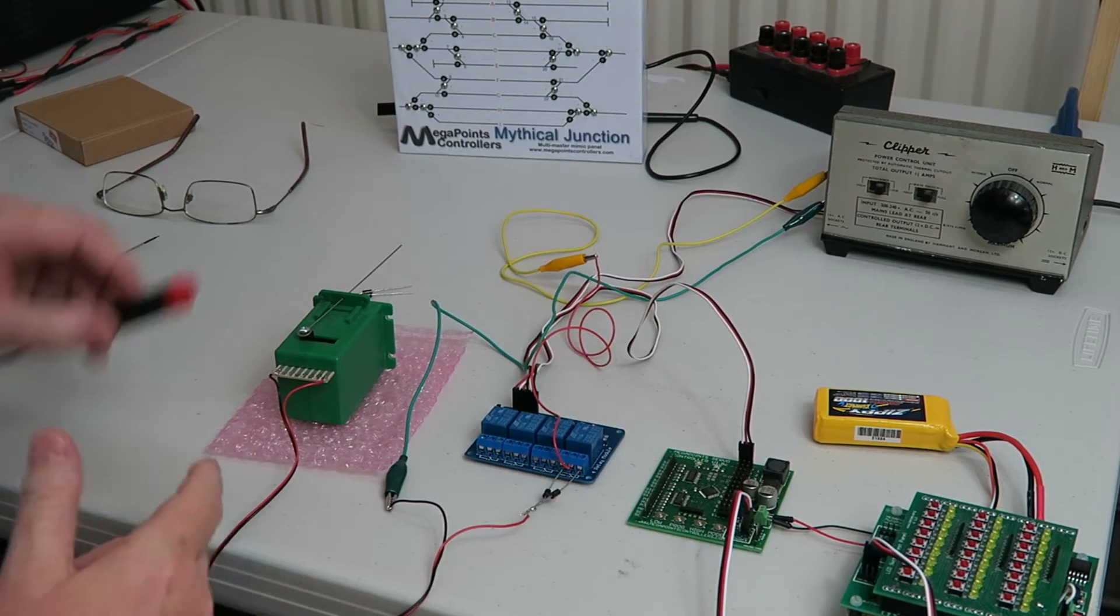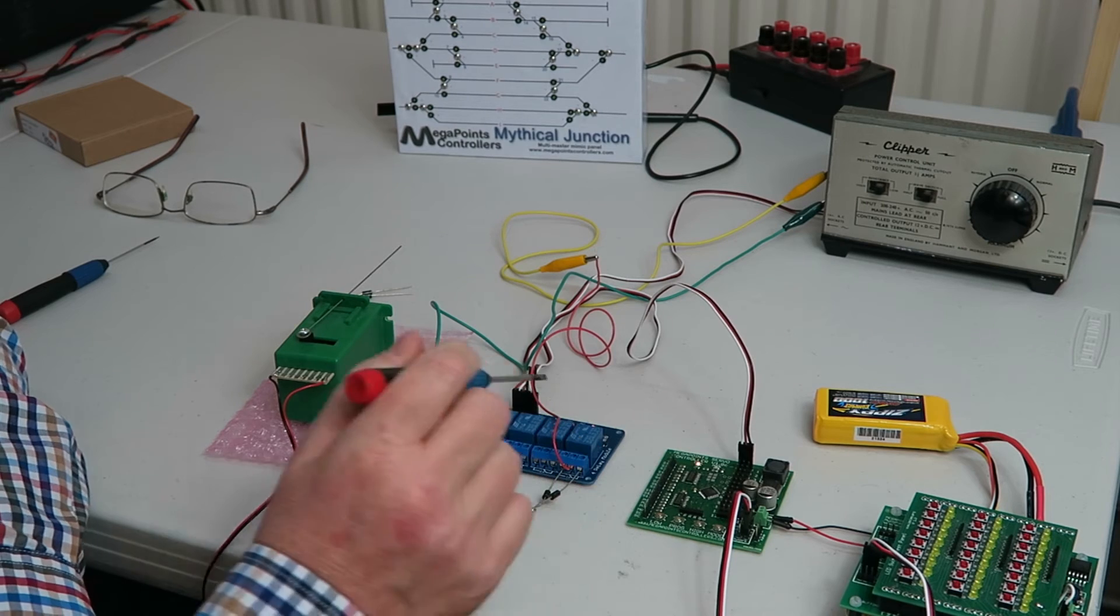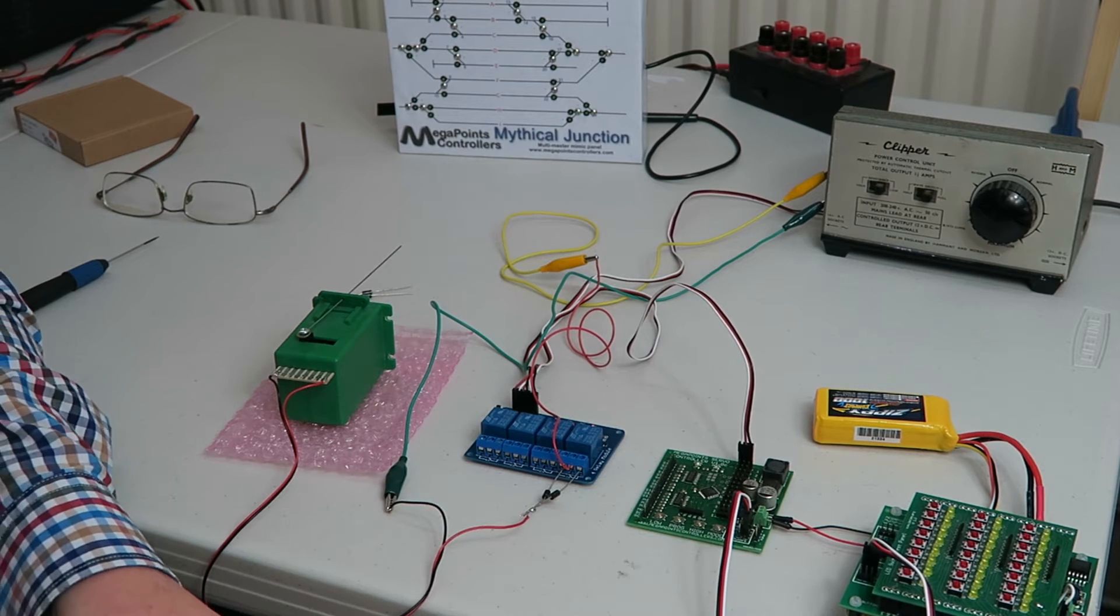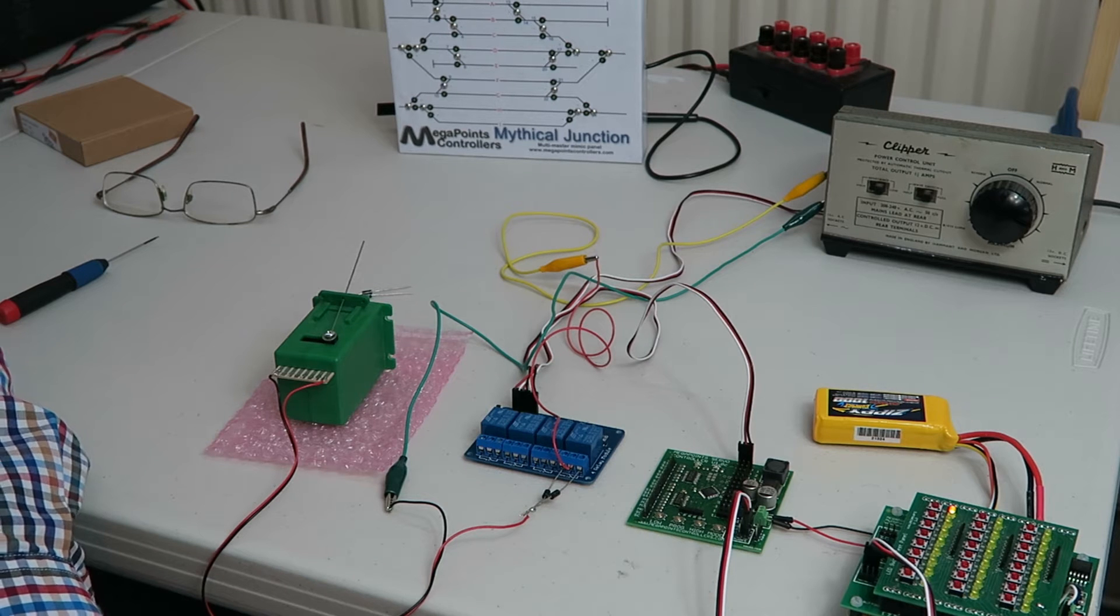So I have my servo controller running driving a relay because I've set it on channel 1 to run mode 5 and when I operate my multi-panel my switch machine moves.